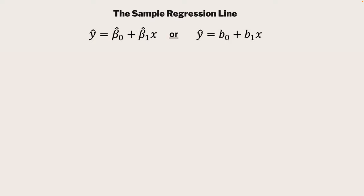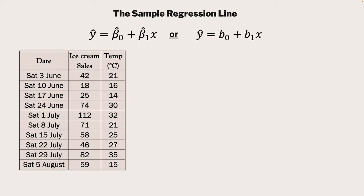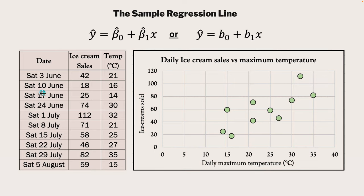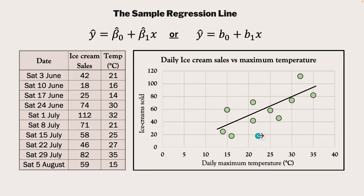Let's have a look at the sample regression line. We can't really talk about a sample regression line without an actual sample. Here's a data set with 10 observations: we've surveyed our ice cream vendor across 10 Saturdays, assessing how many ice cream sales were made and the maximum daily temperature of each Saturday. Putting ice cream sold on the y-axis and daily maximum temperature on the x-axis gives us a scatterplot. A sample regression line would just be creating a line of best fit through that data - the best estimate of the relationship between temperature and ice cream sales. It seems that the higher the temperature, the more ice creams get sold - a positive relationship.